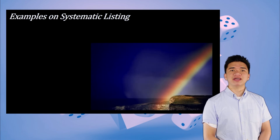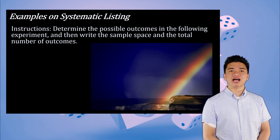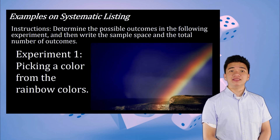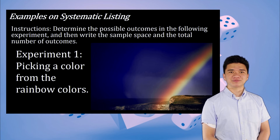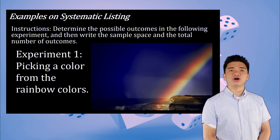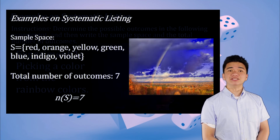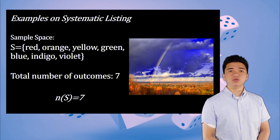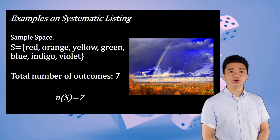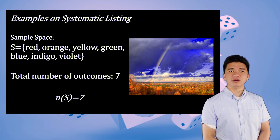Experiment 1: Picking a color from the rainbow colors. The sample space is S = {red, orange, yellow, green, blue, indigo, violet}. The total number of outcomes is 7, or we can write it as N(S) = 7.